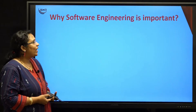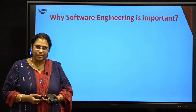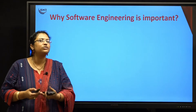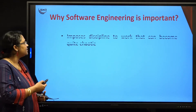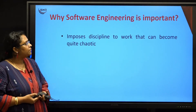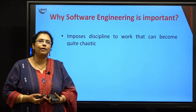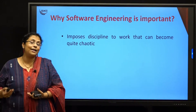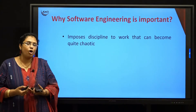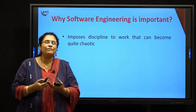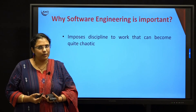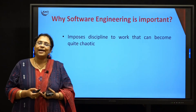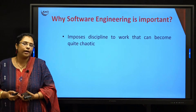Now let us understand why software engineering is very important to us. Software engineering is important because of three reasons. The first reason is that it imposes discipline on work that can become quite chaotic. Generally, if you want to develop any particular software, it involves a large number of steps. If we are not following a proper procedure, it will be very clumsy and difficult. By following software engineering, you can smoothly deliver any product to the customer.